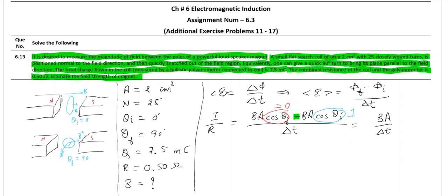We are left with B A upon delta t because this term will become 1. What about the negative sign? Actually, according to Lenz's law, here we have minus delta phi by delta t. So negative, negative will become positive and ultimately we have B A delta t.